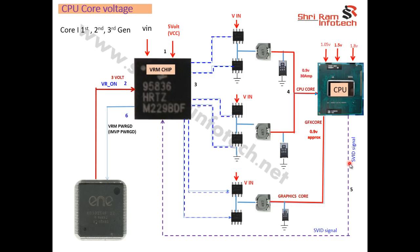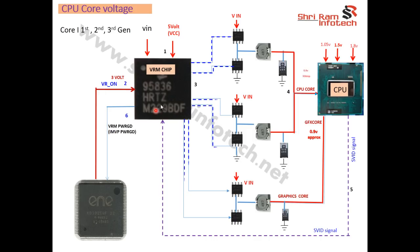The processor uses the SVID signal to convey its current requirements to the VRM section. If it requires more current, it tells the VRM section accordingly — this is the VID signal. Once the CPU core and graphics core voltages stabilize at approximately 0.9V or 0.8V, the VRM section sends out a signal called VRM Power Good, which is 3 volts, indicating the VRM section is working correctly.